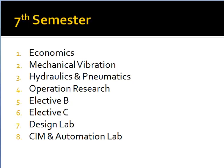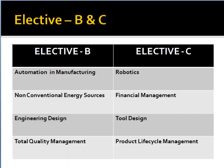In the seventh semester, you have economics, mechanical vibrations, hydraulics and pneumatics, operations research, elective B, elective C, design lab, and simulation and automation lab. For electives B and C, you can go for automation in manufacturing, non-conventional energy sources, engineering design, or total quality management. In group C, you can go for robotics, financial management, tool design, or product life cycle management.